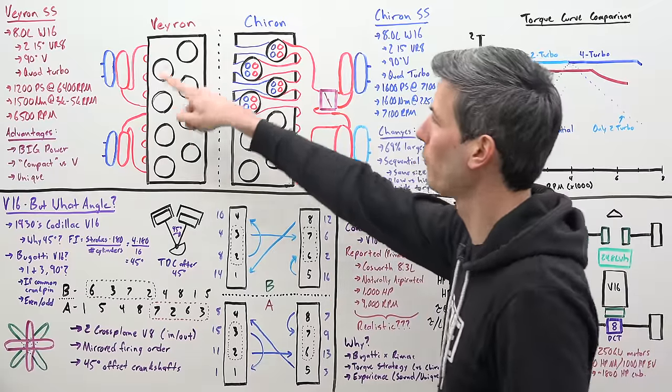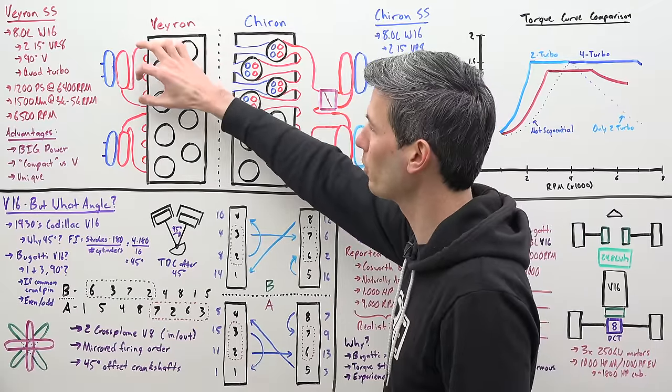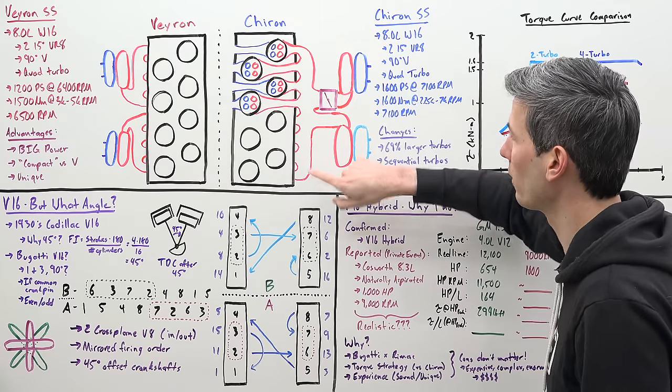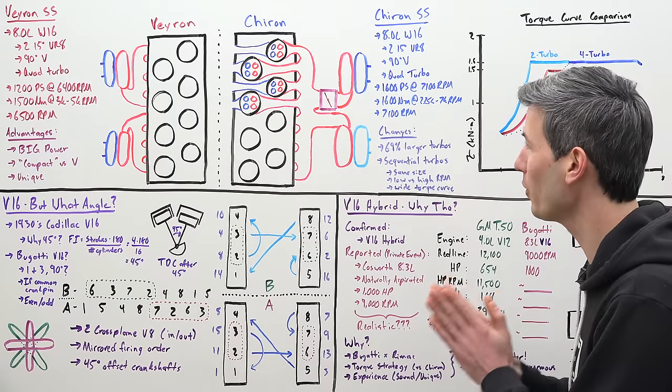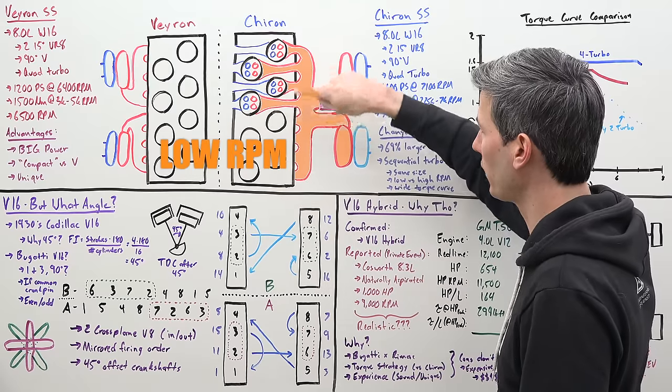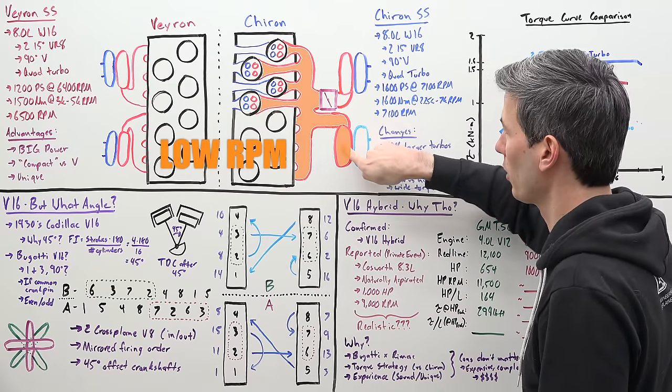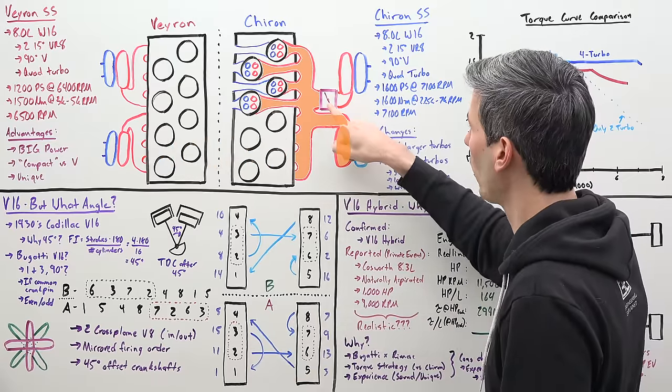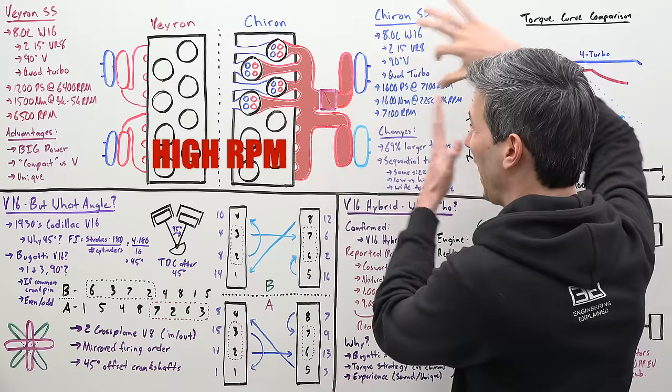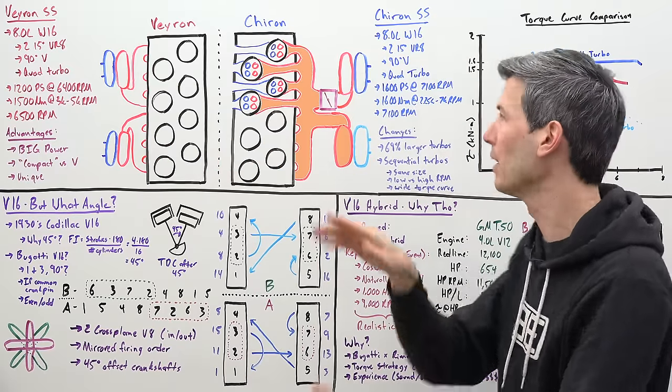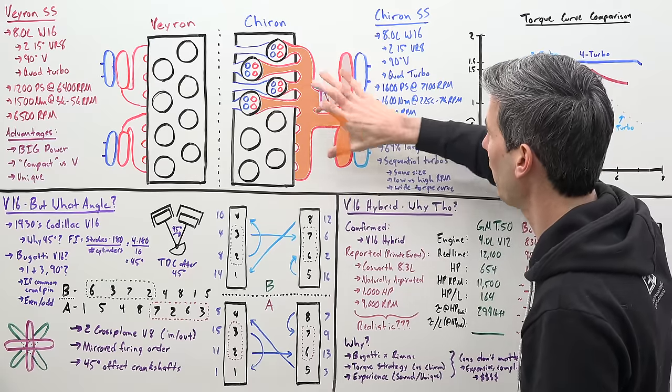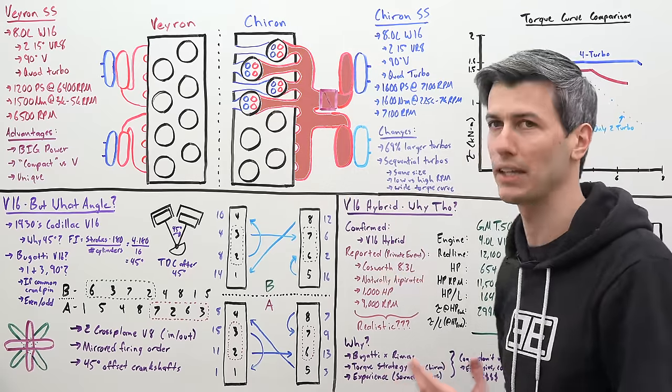The second thing that they did is they now are using sequential turbos. Instead of each group of four cylinders having its own turbocharger like you see here on the Veyron, now you have a shared exhaust manifold for each cylinder bank and so what they're doing here is using sequential turbos. At low rpm all eight cylinders are dumping into one turbocharger. When you get to higher rpm you open up this valve here and then you're using both turbochargers to create boost.